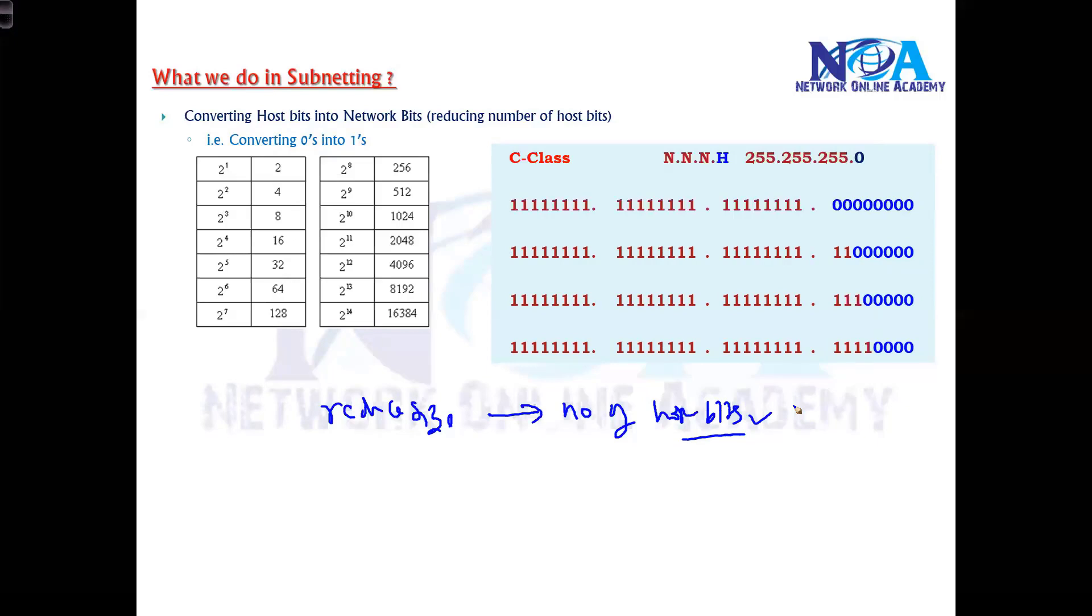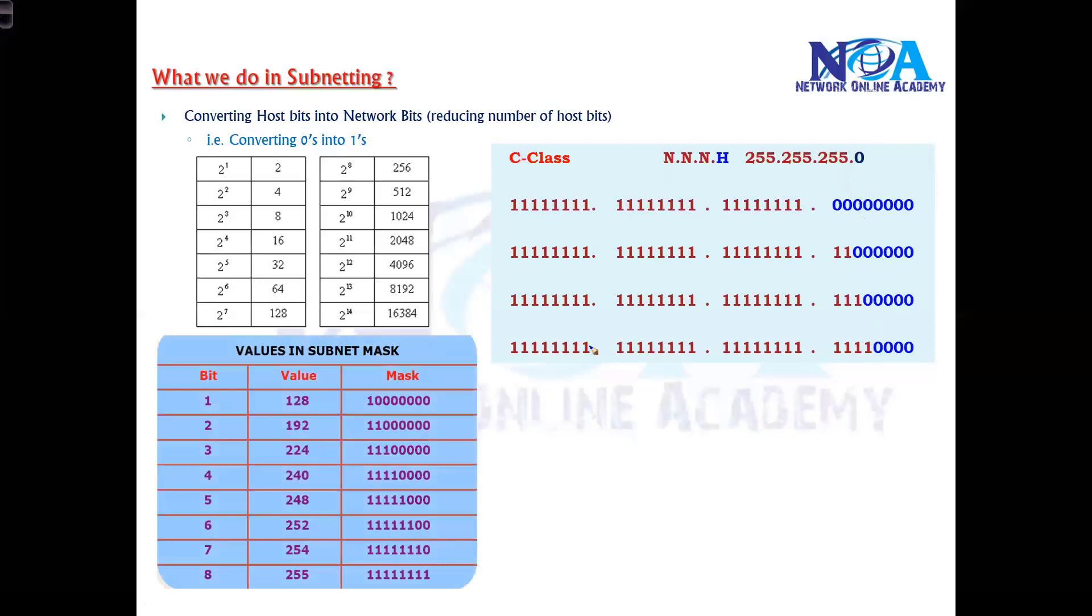Then this is what we do. Whenever you change these things, obviously the subnet mask also will change. We'll talk more on this. If you are writing this value, then the subnet mask is 255.255.255.0. If you write this subnet mask, then the subnet mask will be 255.255.255.192. If you write like this, the subnet mask will change. The subnet mask will tell how many network bits and how many host bits. We are ready to go with the examples. Once we do a couple of examples, then we'll get a more clear picture.